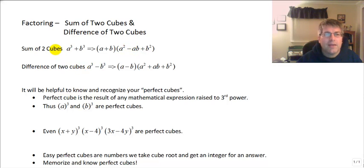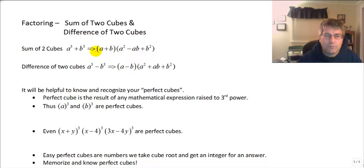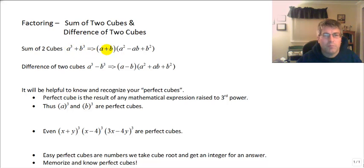You'll see that in both the sum and difference of two cubes, each factored form has one minus sign. The binomial always takes the sign of what our original problem is. So for a cubed plus b cubed, we use a plus b in the binomial.